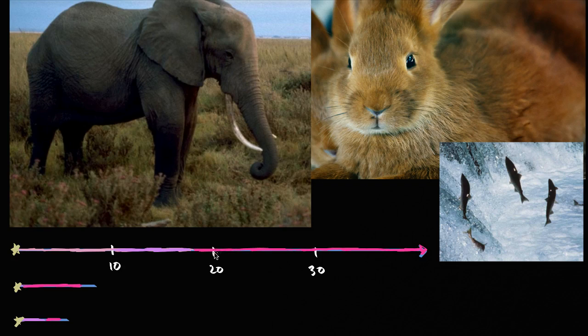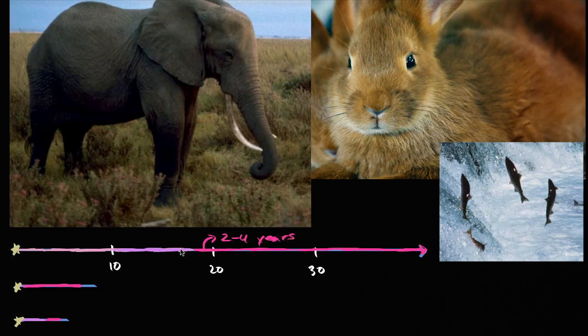And then they move into a phase when they do reproduce, and they will reproduce on the order of once every two to four years. A female African elephant will reproduce once every two to four years.